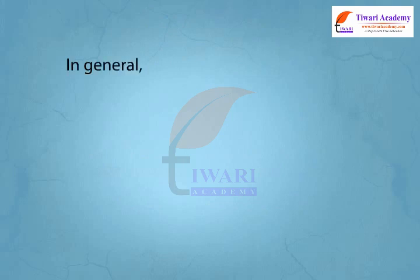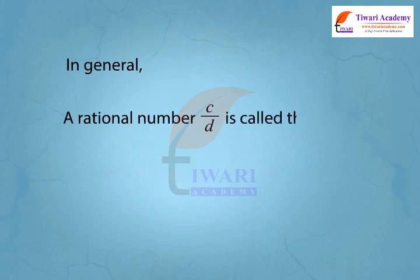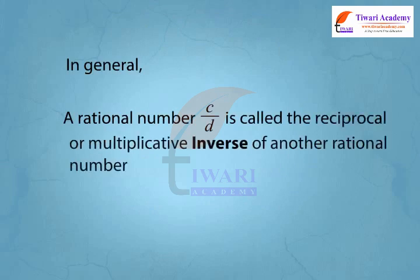In general, a rational number c upon d is called the reciprocal or multiplicative inverse of another rational number a upon b if a upon b into c upon d is equal to 1.